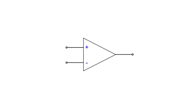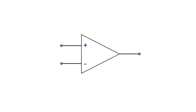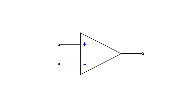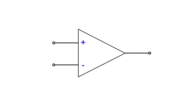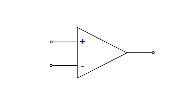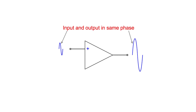The operational amplifier has a differential input. In other words, the output is proportional to the difference between the two inputs. The amplifier inputs are labelled plus for the non-inverting input and minus for the inverting input. If a signal is applied to the non-inverting input, the signal will come out at the output in the same sense — a rising input level will result in the output level increasing. They are said to be in the same phase.